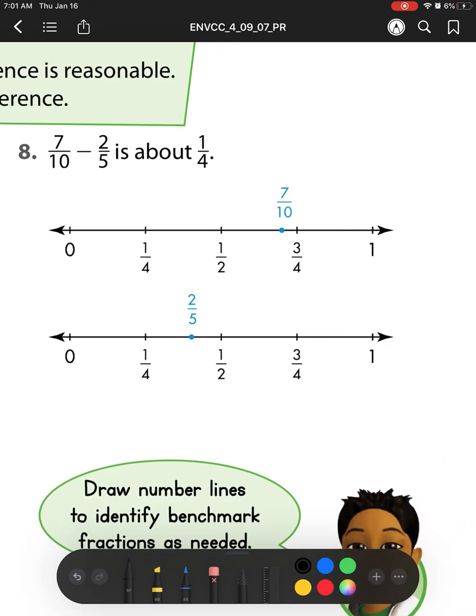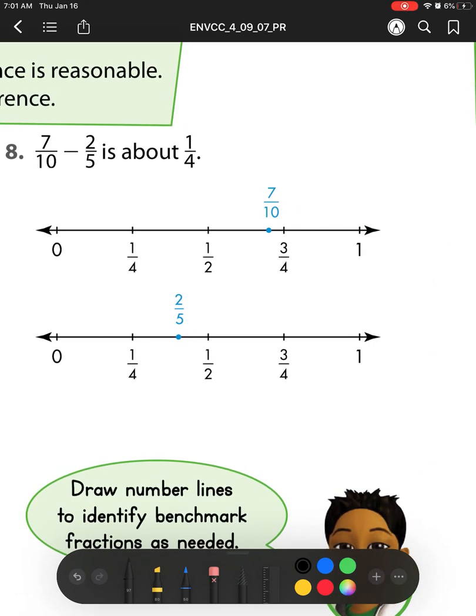Let's check number 8. 7 tenths minus 2 fifths is about 1 fourth. Here I have my 7 tenths, and I'm taking away this much. So what I'm left with is about this much of my whole. I'm just cutting it off, so I have this part left. And if I look, that's about 1 fourth. It's taking up about 1 fourth of my number line. You'll see it's about this much space right here. So yeah, my estimate is reasonable. I'm going to put yes, or reasonable.